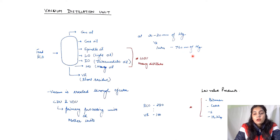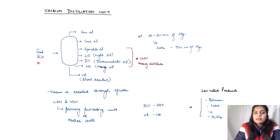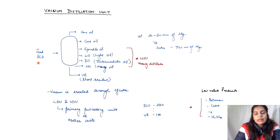Now in the vacuum distillation unit, we reduce the pressure to 20 to 30 mmHg and then start boiling the RCO — residue crude oil — which was left from the previous session as our feed. I recommend watching part one and the crude oil basics video to get a full understanding of how things work from the start.